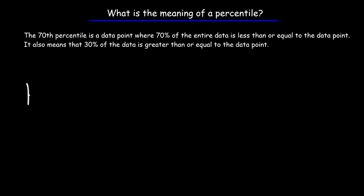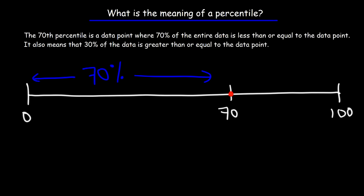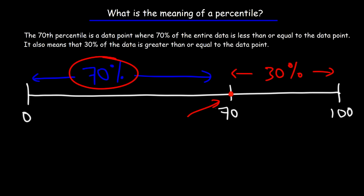Let's use a visual example with a number line from 0 to 100, marking 70. Let's say you took the SAT exam and your score ranks in the 70th percentile. That means 70% of students had a score equal to or less than yours — you scored better than 70% of students. However, 30% of students did equal to or better than you. So the 70th percentile tells you that 70% of the data is below it, but 30% is greater than or equal to it.